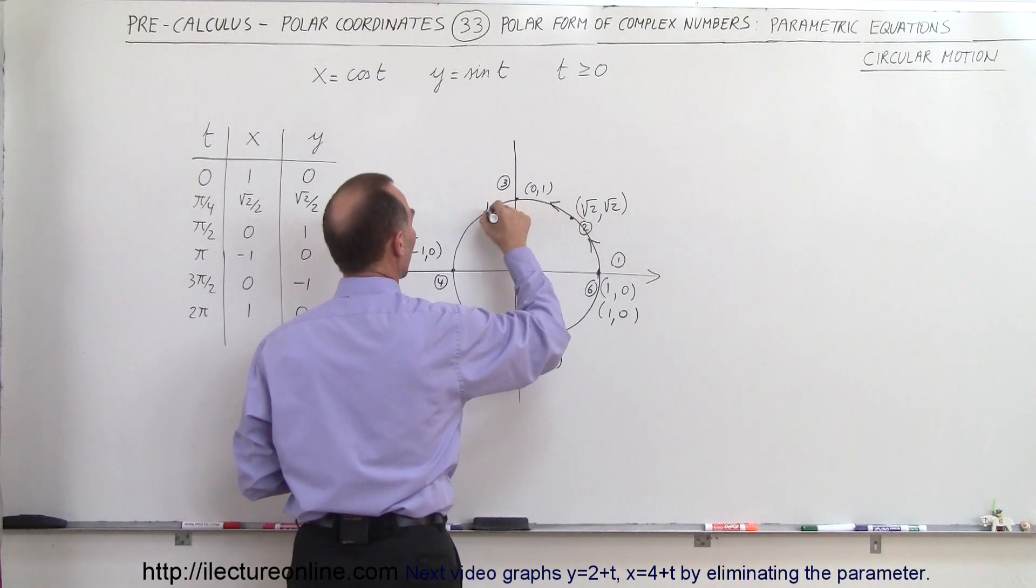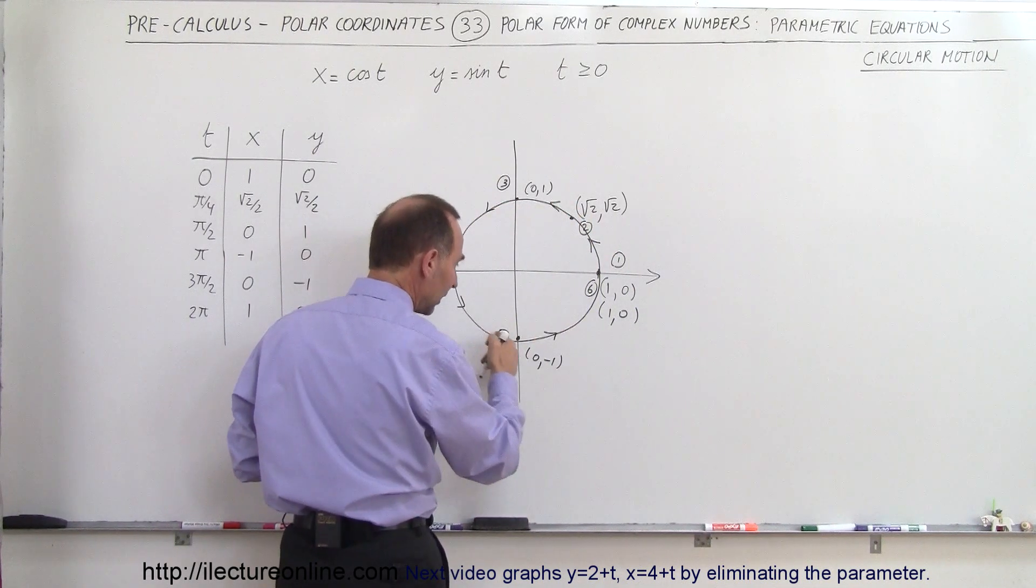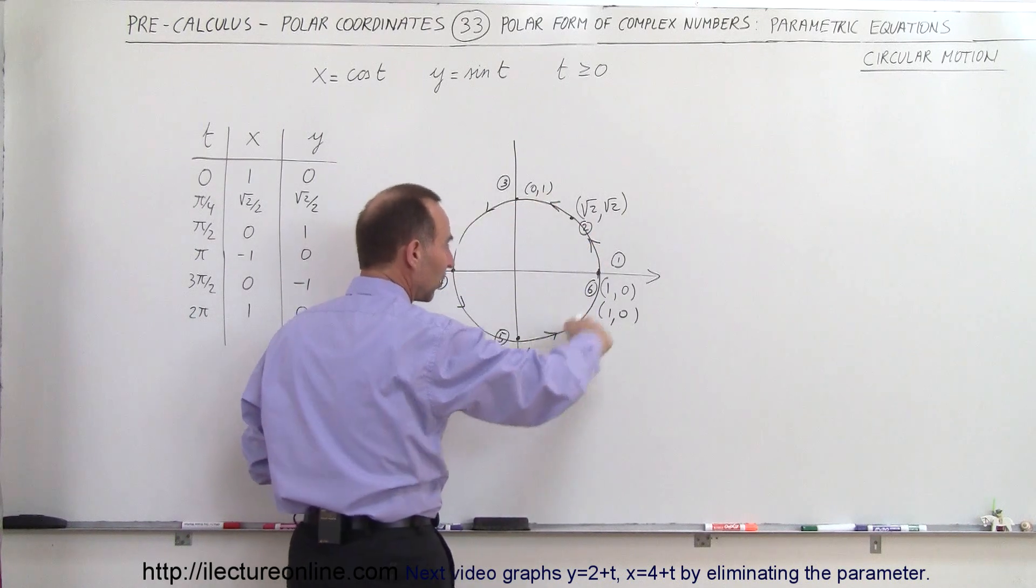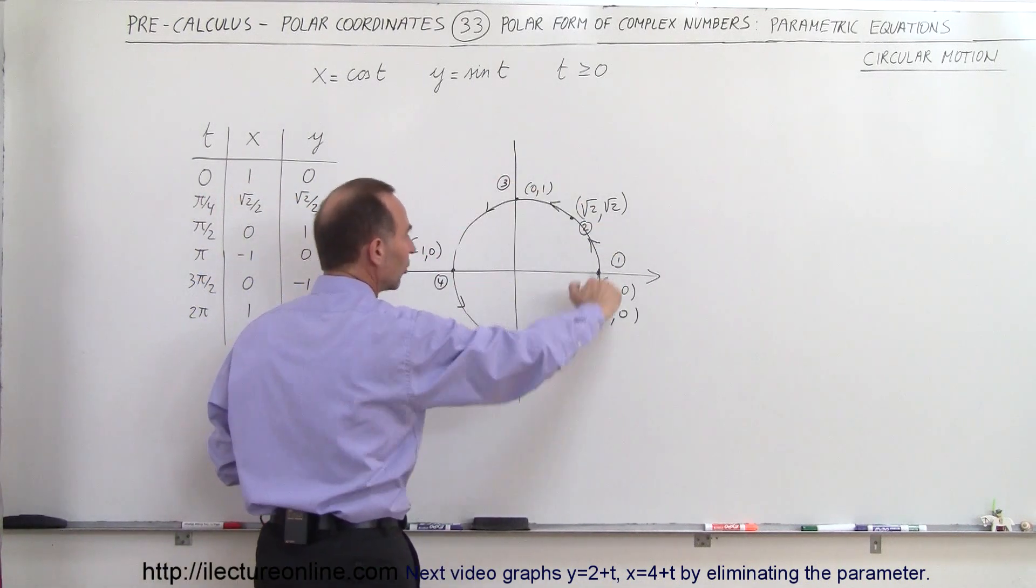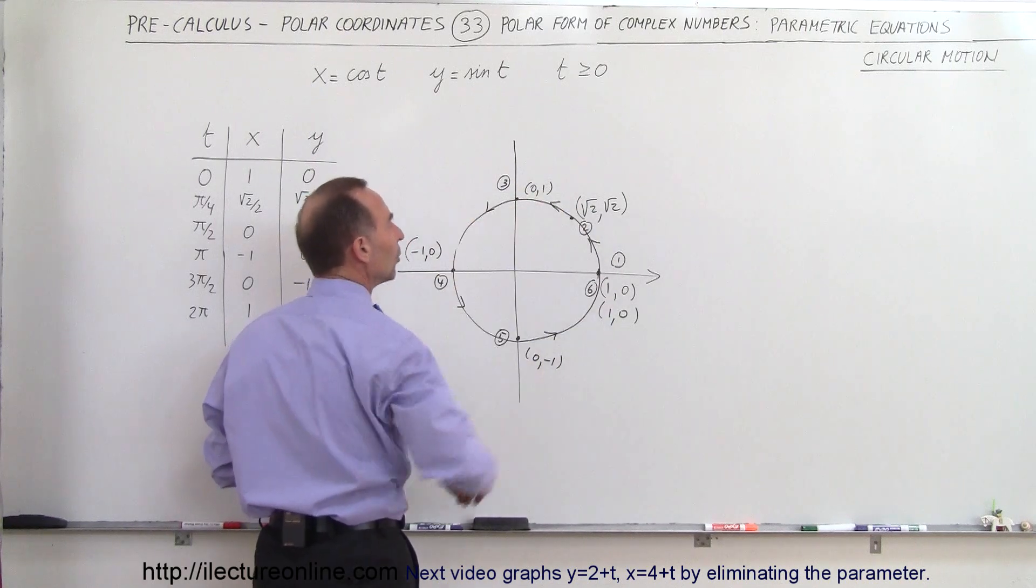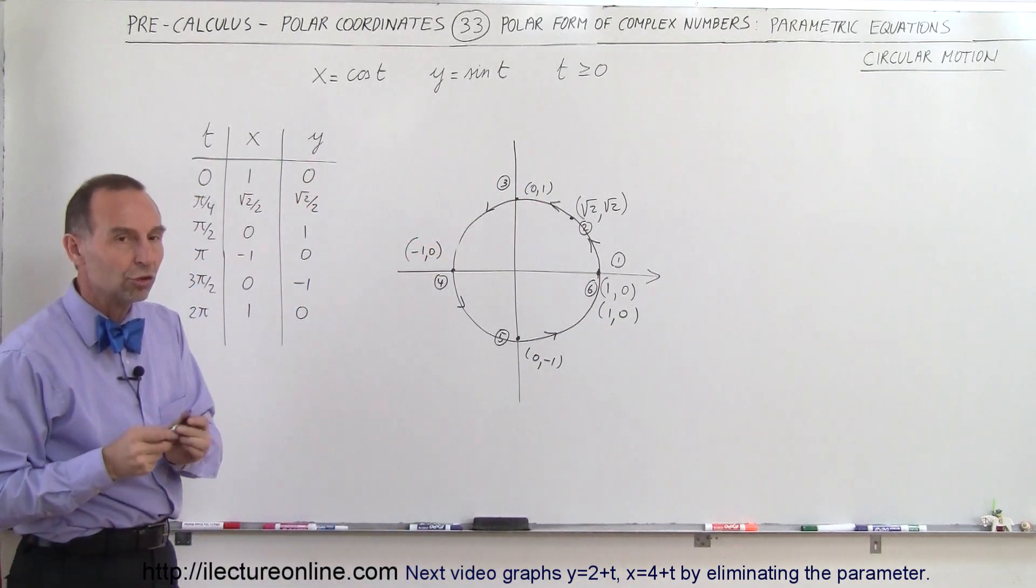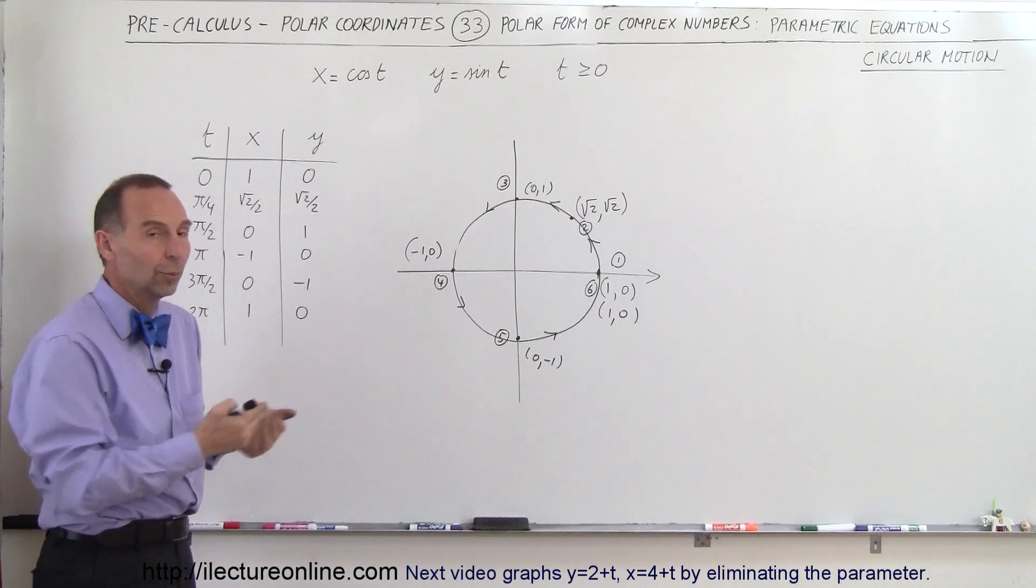Why do we call it circular motion? Because as time goes by, this represents the position of a particle. You can see that the particle will simply continue to move around in a circle, a path like this, as time goes by.